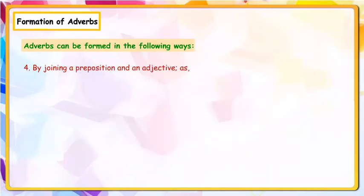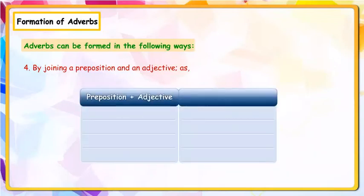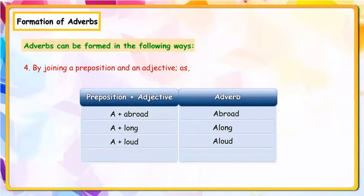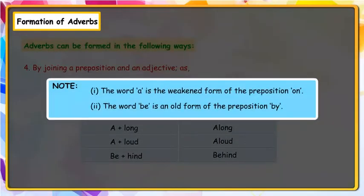By joining a preposition and an adjective: Preposition + adjective → adverb. A + broad = abroad; A + long = along; A + loud = aloud; B + hide = behind. Note: The word 'A' is the weakened form of the preposition 'on'. The word 'B' is an old form of the preposition 'by'.